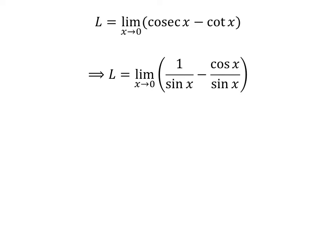We know cosecant of x is equal to 1 upon sin of x, and cotangent of x is equal to cosine of x upon sin of x. Here I have replaced cosecant of x and cotangent of x. As the denominator of both fractions are equal, the difference of the fractions is 1 minus cosine of x upon sin of x.